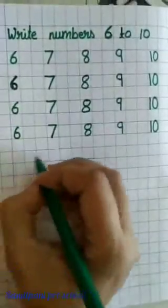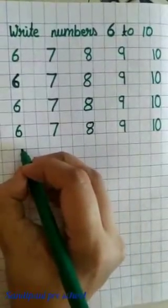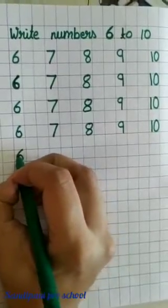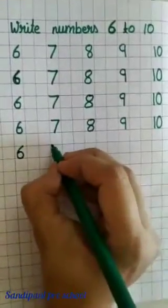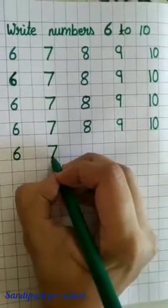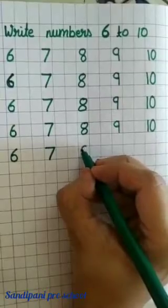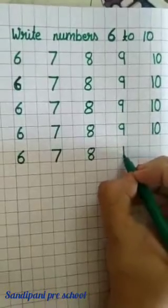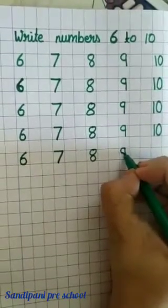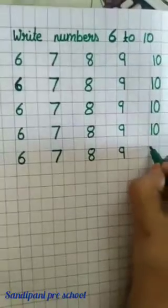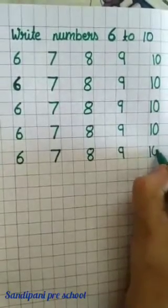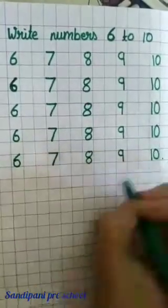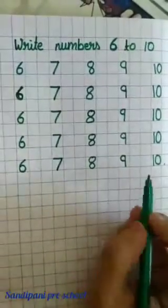It's very simple. Let's do once more. A curve joining another curve makes number 6. Slipping line, slanting line, number 7. A curve joining another curve makes number 8. Standing line, curve, number 9. 1, 0, 10. So, children, do practice 6 to 10.